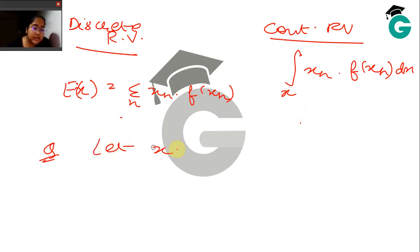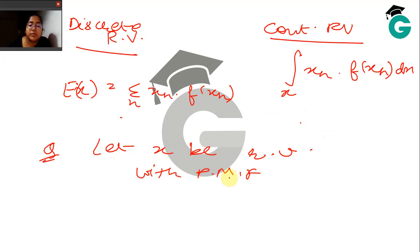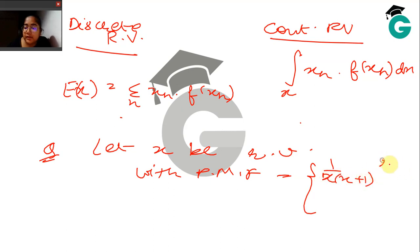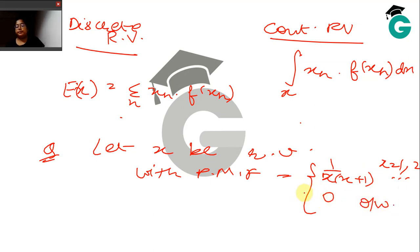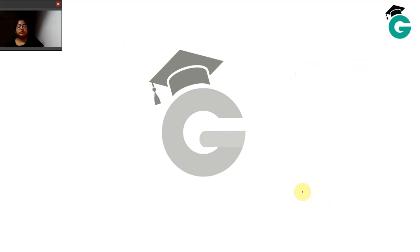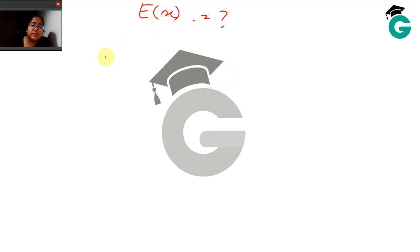Let's take a question. Let X be a random variable with PMF — this tells us we are dealing with a discrete random variable — equal to 1 / (x(x+1)) if x equals 1, 2, 3, and so on, and 0 otherwise. You are asked to find the expectation of X.